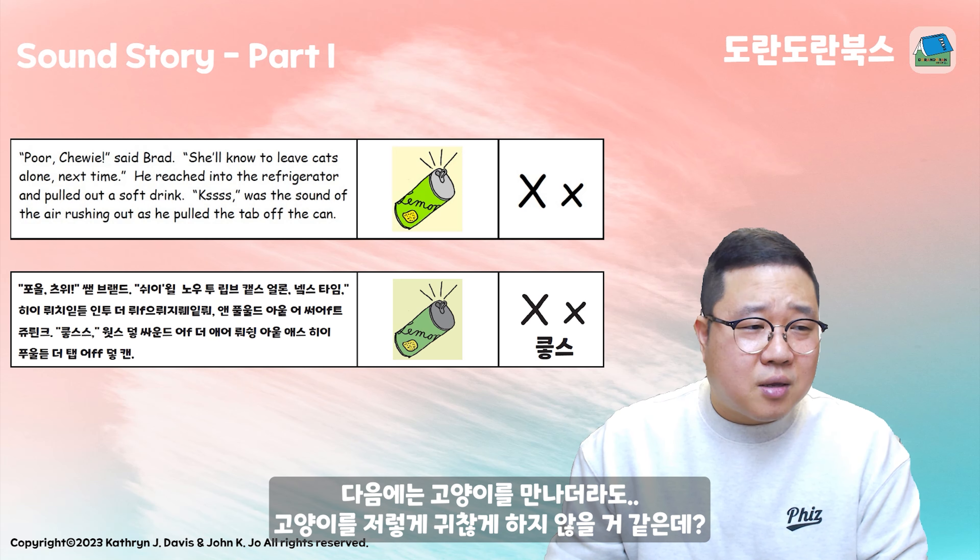He reached into the refrigerator — Brad가 냉장고에 손을 뻗쳐서 — and pulled out a soft drink. 청량 음료를 꺼냈어요. Was the sound of the air rushing out as he pulled the tab of the can. Can에 있는 뚜껑이 나는 소리가 ks. 탄산음료를 딱 땄을 때 ks 소리가 나잖아요. X가 아니라 ks 소리예요. 알았죠?